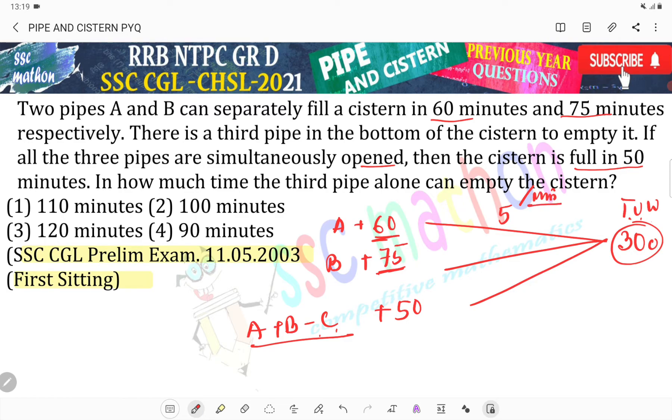50 minutes fills up total 300 units, so 1 minute fills up 6 units.